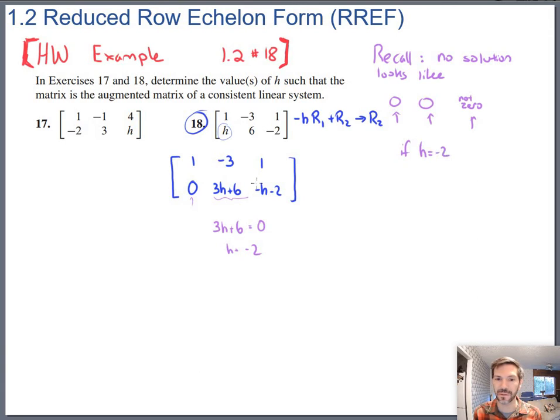If H is negative 2, the second row becomes 0. Plug that in there, that becomes 0. And negative negative 2 is positive 2 minus 2 is also 0. So if H equals negative 2, we don't get a contradiction. So even with our one candidate for putting a 0 in this spot, that did not end up creating a contradiction because it also put a 0 in that spot.